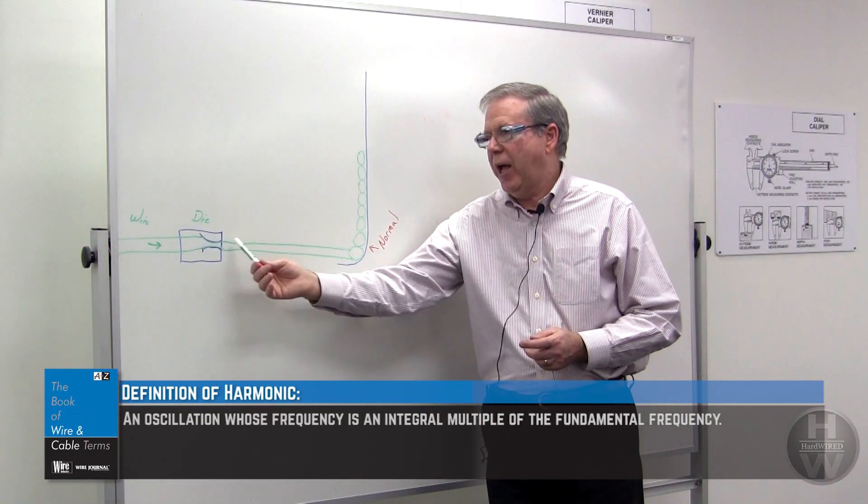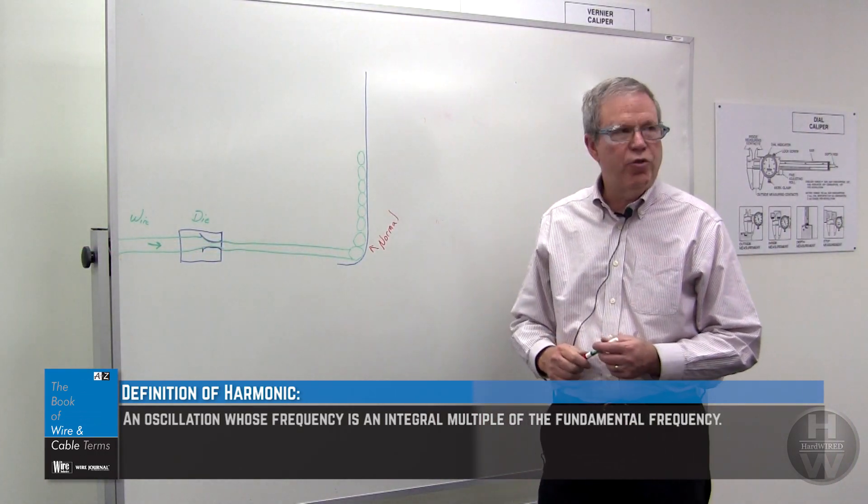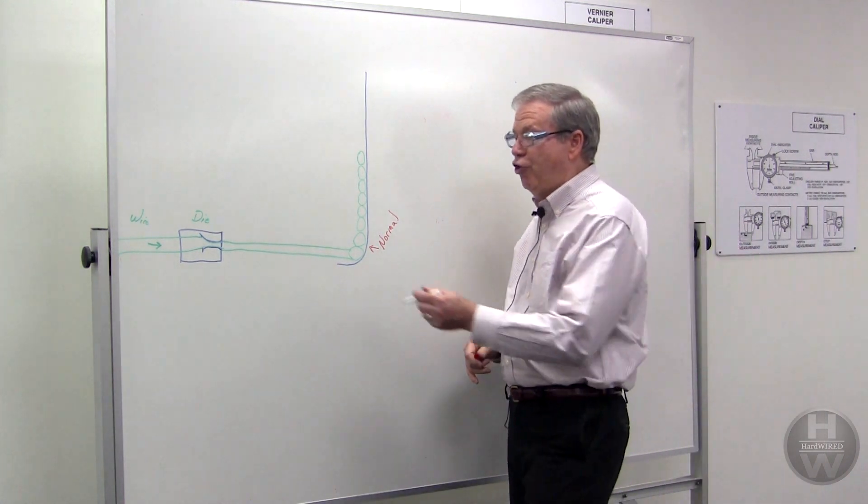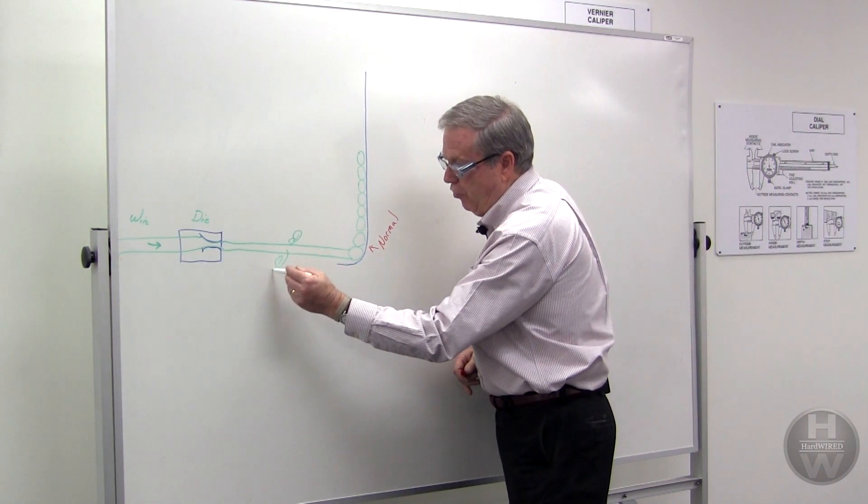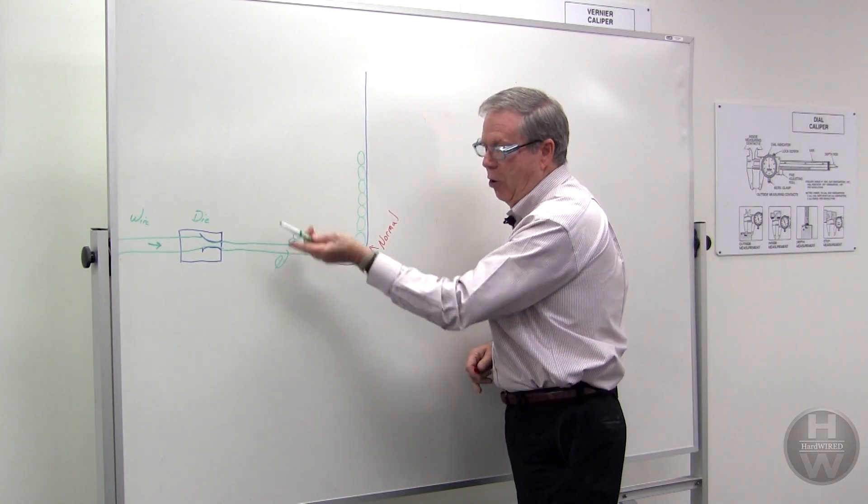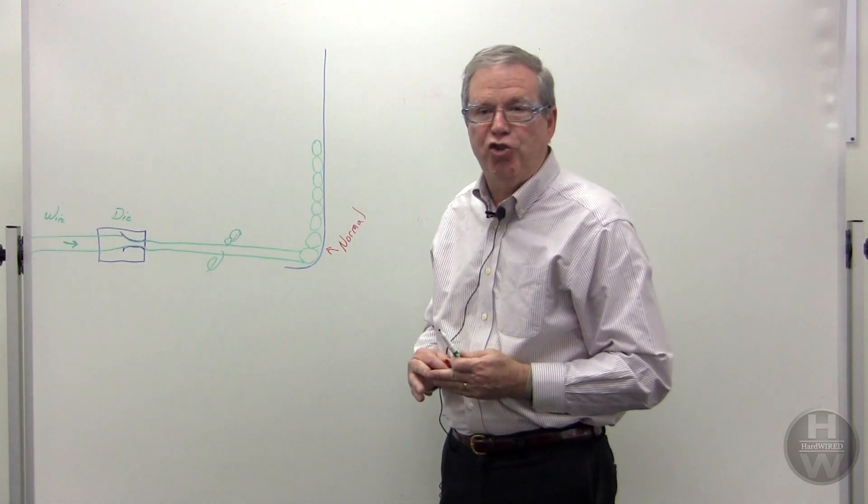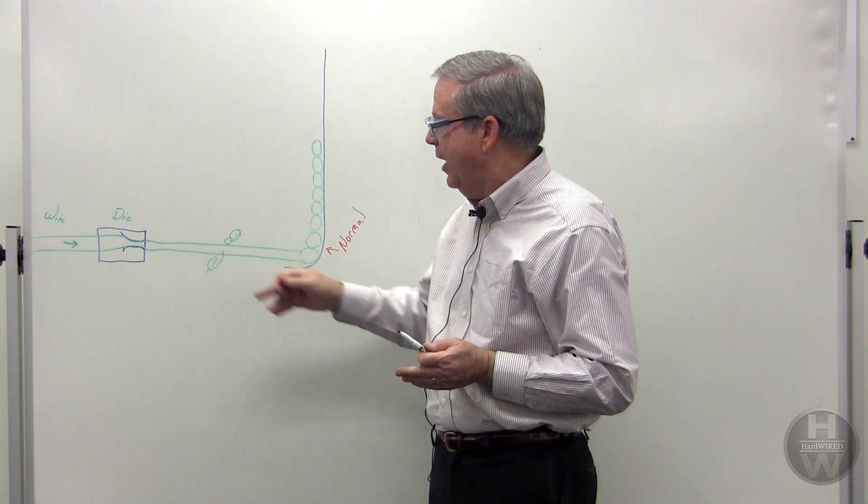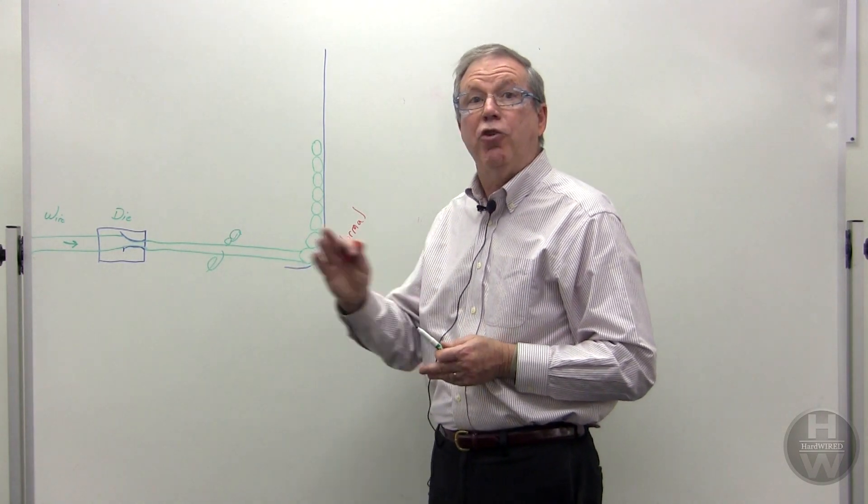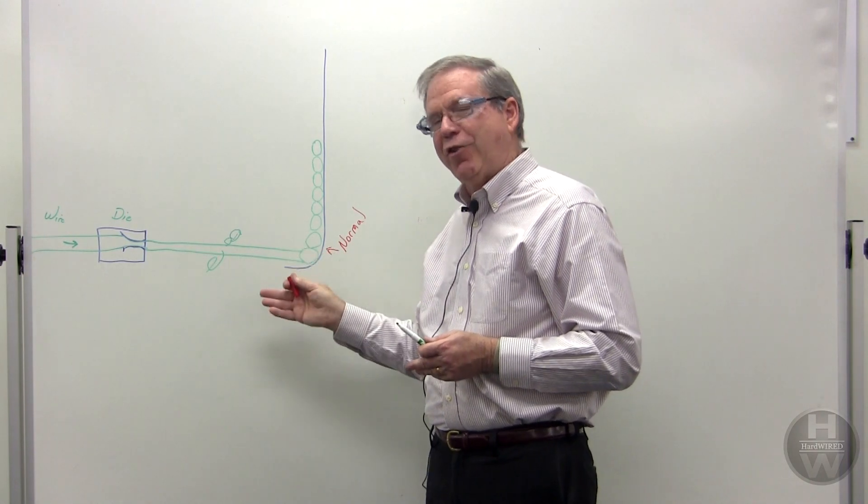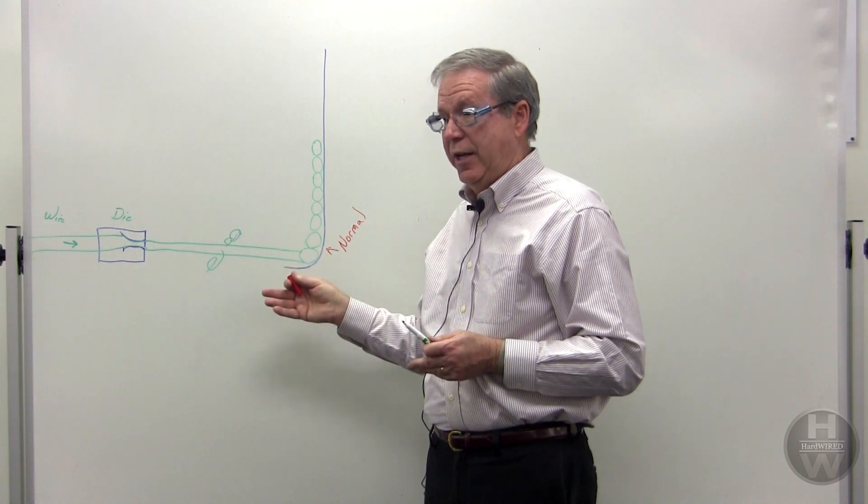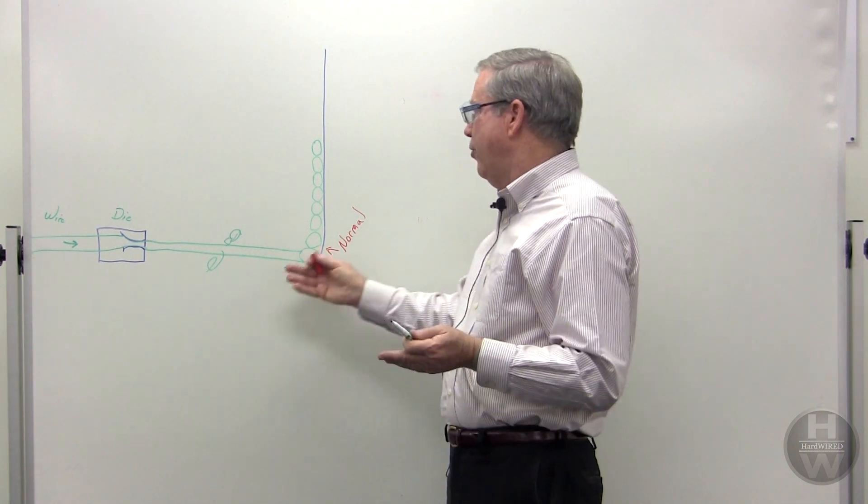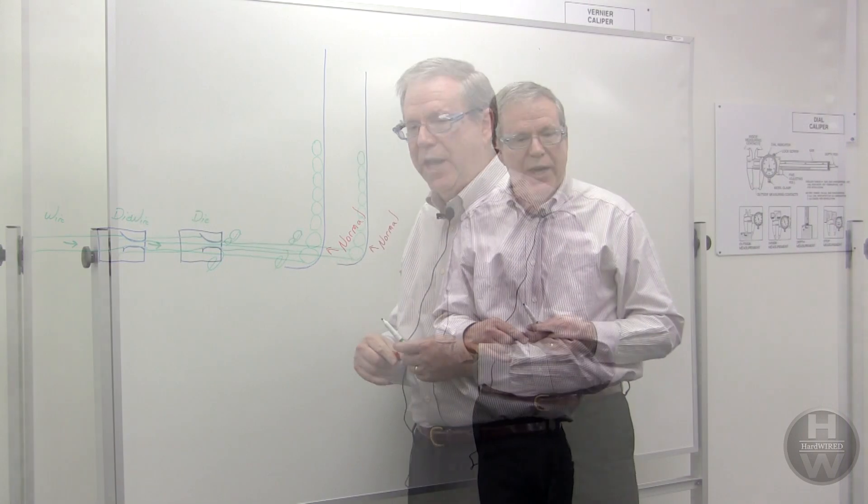The only way to stop chatter in a wire is to lay something on the wire while it's running. Many people will just take a chain and lay a chain across the wire to stop that harmonic vibration. There's nothing wrong with using a chain, provided you keep your eye on it, because after the chain has been laying on the wire for a while it'll get a groove in it. That groove will scratch the wire or rub the residual lubricant off the wire, and you're going to the next die where you've taken the lubrication off.